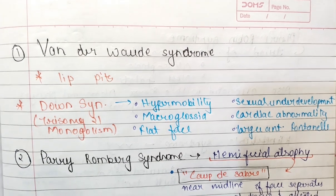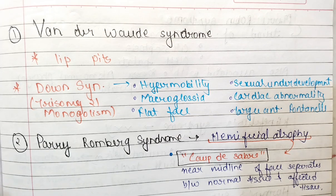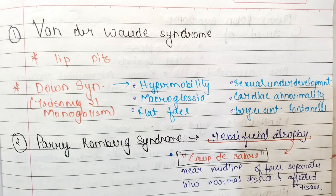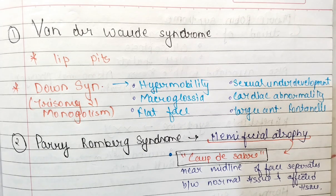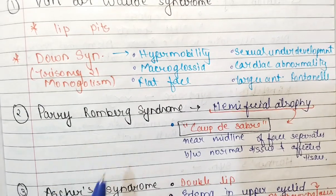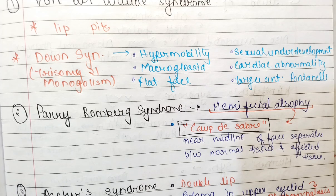Then we have Down syndrome. Down syndrome is a trisomy of chromosome 21, also called mongolism. From the perspective of a dentist, you will find hypermobility of the teeth, macroglossia, flat face, sexual underdevelopment, cardiac abnormality, and a large anterior fontanel.